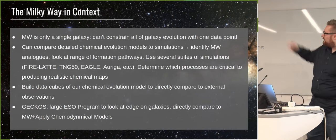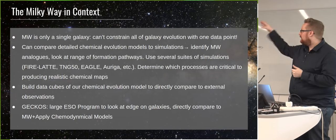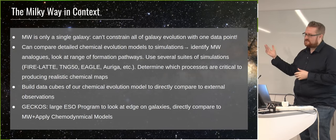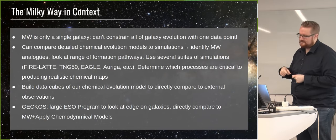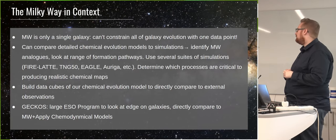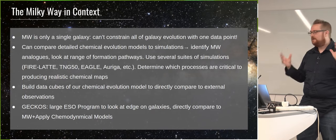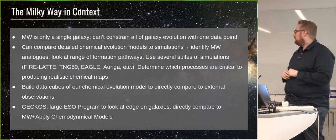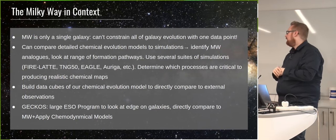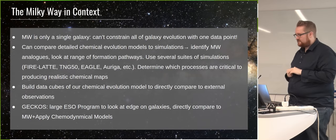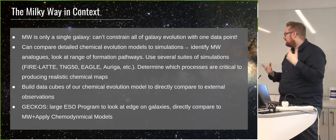The Milky Way is only a single galaxy — you can't constrain all of galaxy evolution with one data point. So we're going to take our models that now actually work to identify Milky Way analogs in simulations, determine which processes are critical to producing realistic galaxies, and build data cubes from our chemical evolution models to directly compare to external observations. The data from instruments like MUSE is now getting to a quality that resembles Milky Way studies. We'll build an IFU data cube so you can make an apples-to-apples comparison of something observed with MUSE and the Milky Way. I'll also talk about the GECKOS program — a large ESO program to look at edge-on galaxies and directly map chemistry structure as a function of radius and height above the plane.